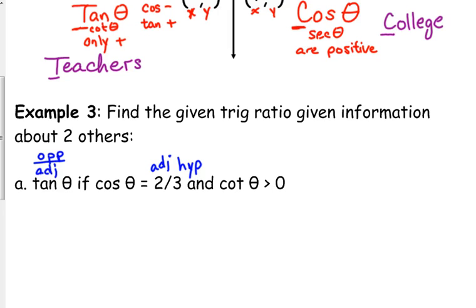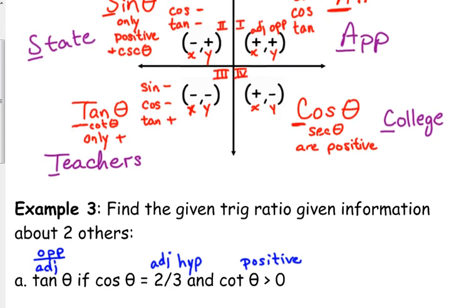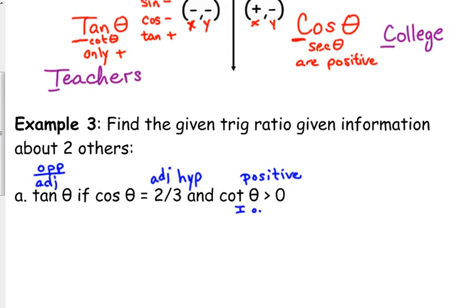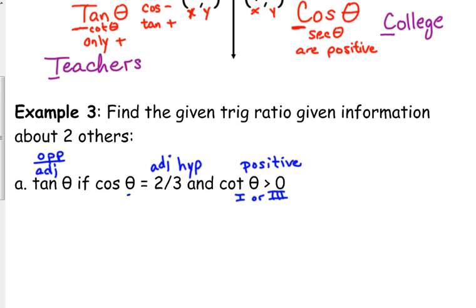Cotangent of theta is greater than zero — that's a fancy way of saying cotangent is positive. We have two options for where cotangent can be positive: in the first quadrant everything's positive, and in the third quadrant cotangent is positive. So we are either in the first or the third. Well, cosine here is two over three — that's positive. Cosine is positive in the first and the fourth. So where do those two overlap? They overlap in the first. So I know that I'm in the first quadrant.